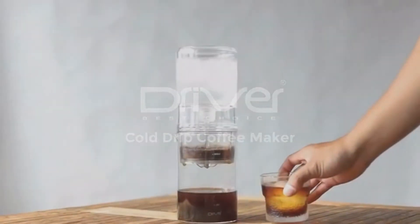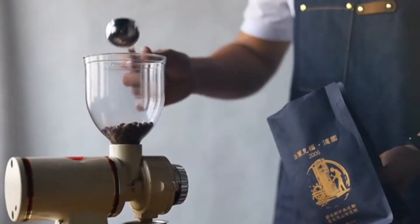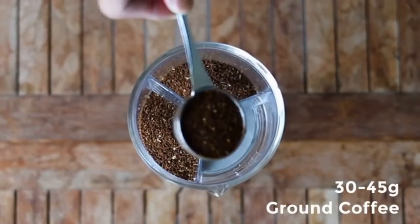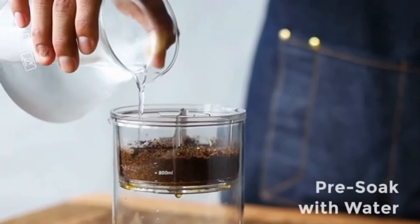This is Driver, the refreshing cold drip coffee maker ready in under two hours. This is how it works. To get started, add 45 grams of ground coffee, ensure it is level, and pre-soak it with water.